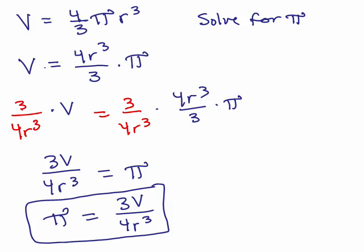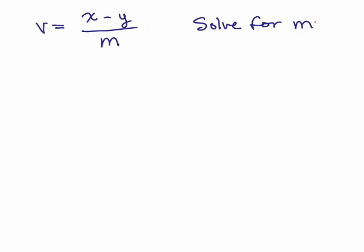You could have done this in two steps by, on this second line here, you could get rid of the fraction first by multiply both sides by 3 and then, at the second step, divide both sides by 4 R cubed. But if you multiply by the reciprocal, it's done in one step.